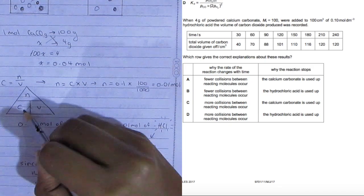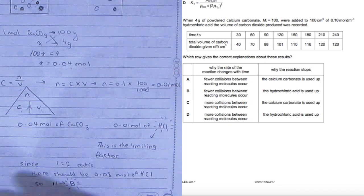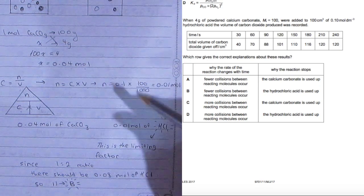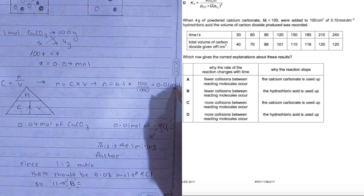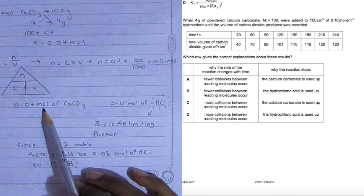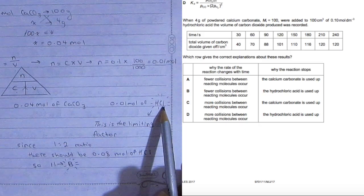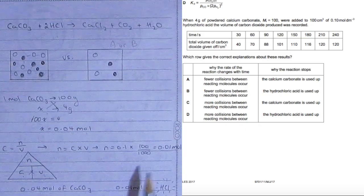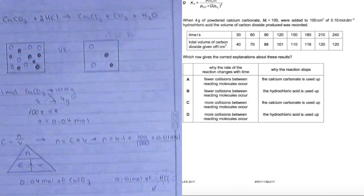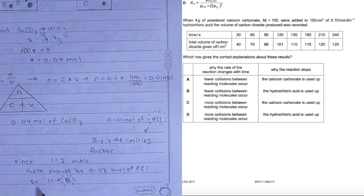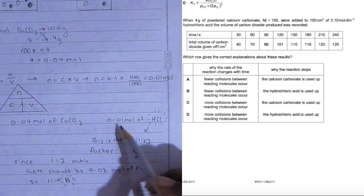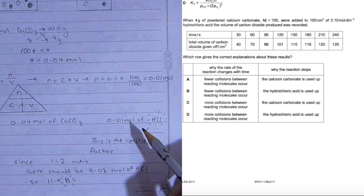The concentration is 0.10 moles per decimeter cubed times the volume, which is 100 centimeters cubed. You need to change it to decimeters cubed by dividing by thousands, which gives you 0.01 mole. So we have 0.04 moles of calcium carbonate and 0.01 mole of HCl. This is the limiting factor because two moles of HCl should react with one mole of calcium carbonate. If you double the calcium carbonate, 0.04 times 2 equals 0.08.